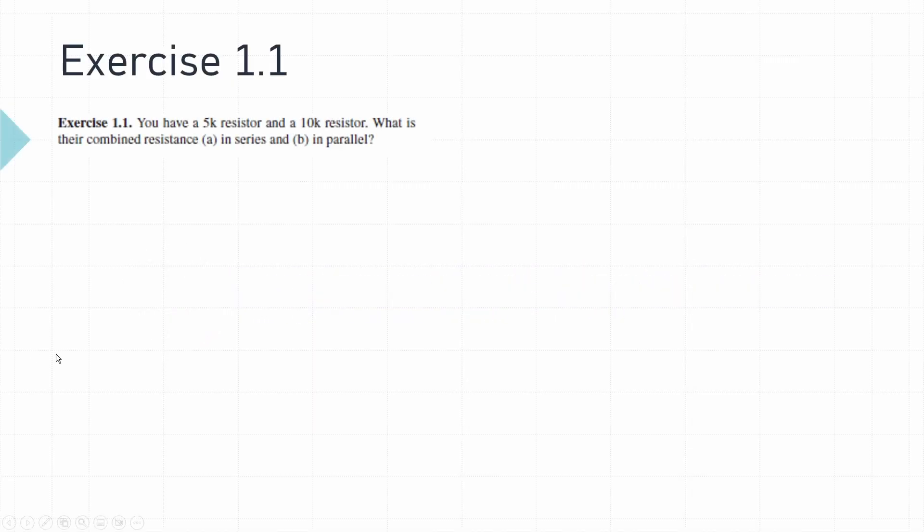The first exercise is on page five and it's part of chapter one, resistors. The exercise asks you to calculate the combined resistance of a 5 kilo ohm resistor and a 10 kilo ohm resistor in series and then second in parallel.